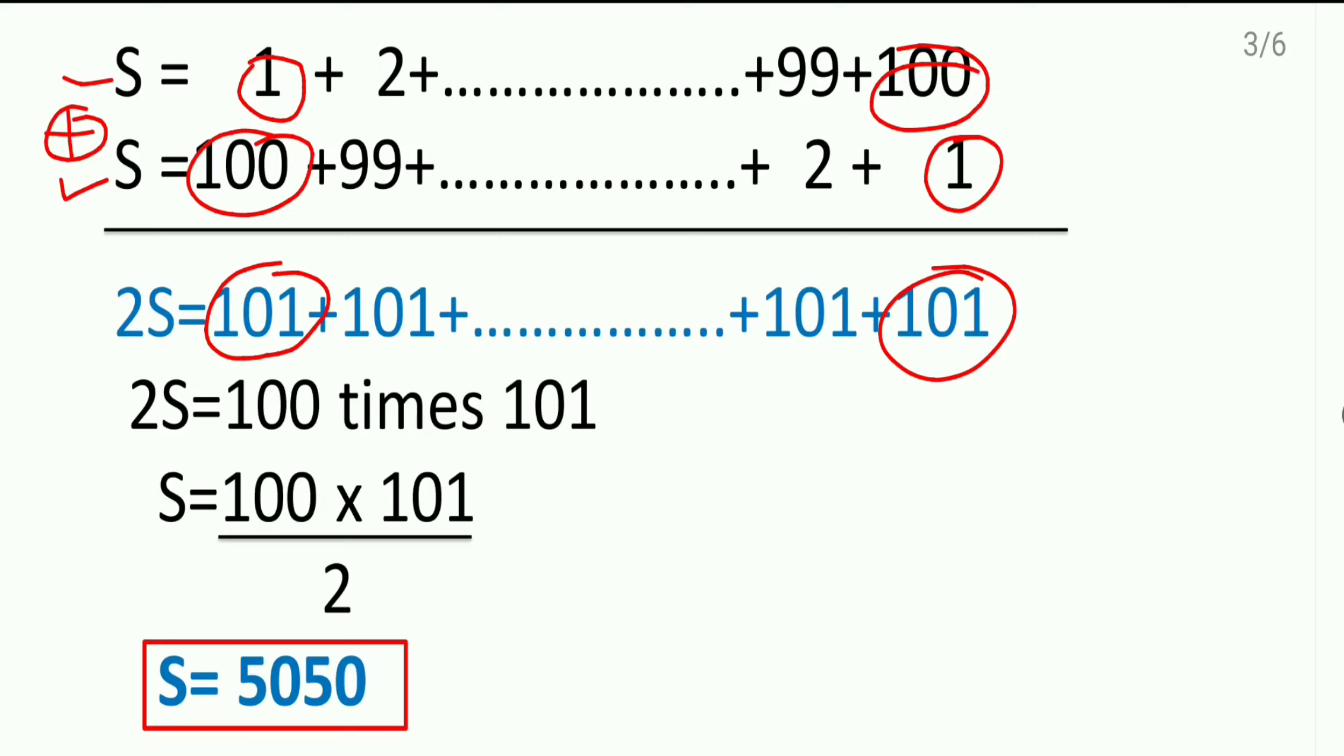100 times, it means that 100 into 101. This 2 which was multiplying here, it came down to divide. And after cancellation, 2 ones are, this is 250. 50 into 101, his answer came as 5050.